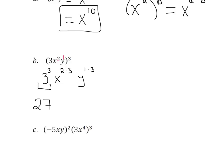And then x to the 2 times 3 is going to be x to the 6. And then we're going to get y to the 1 times 3 is y to the 3rd. And that's that one right there.